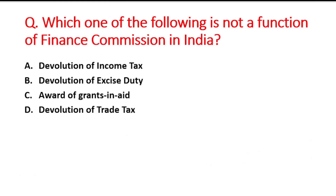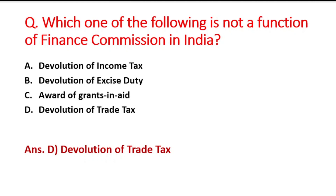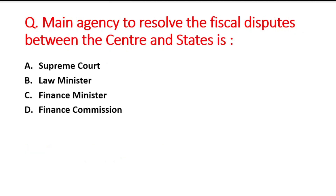Question: Which of the following is NOT a function of the Finance Commission in India? Option A is devolution of income tax, B is devolution of excise duty, C is award of grants-in-aid, and D is devolution of trade tax. The right answer is option D — devolution of trade tax is not a function of the Finance Commission. Next question: The main agency to resolve fiscal disputes between the Centre and the states is the Finance Commission — option D is correct.